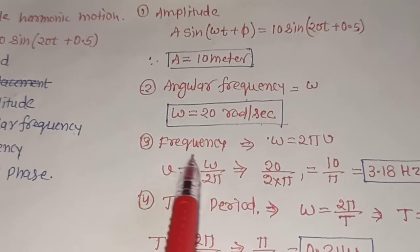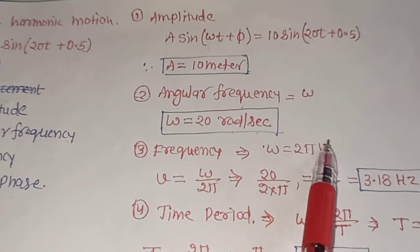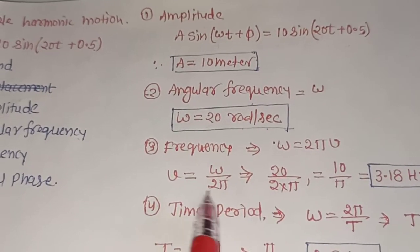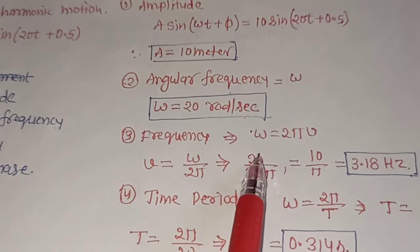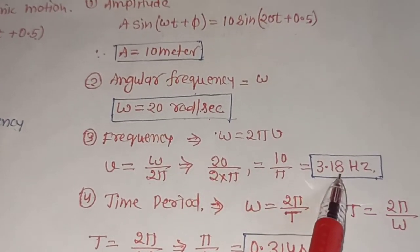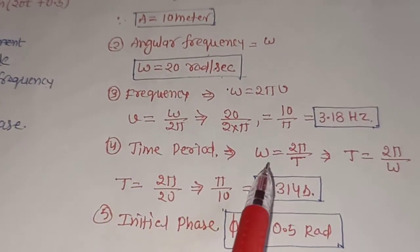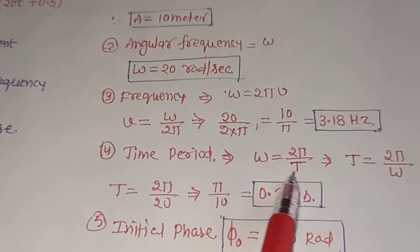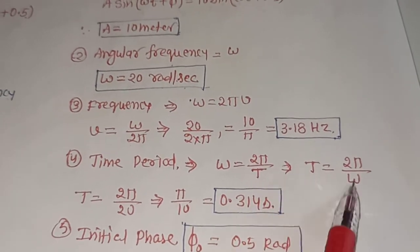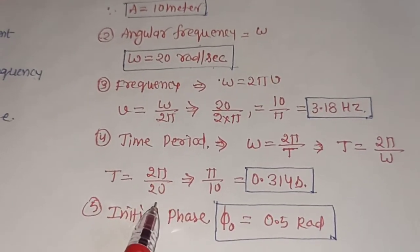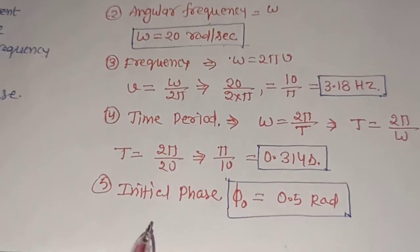Now we have to find the frequency. Before finding the frequency, you need to know the formula. The formula for time period is omega equals 2π divided by T, where T is the time period. Using this expression, you can calculate the time period as approximately 0.314 seconds.